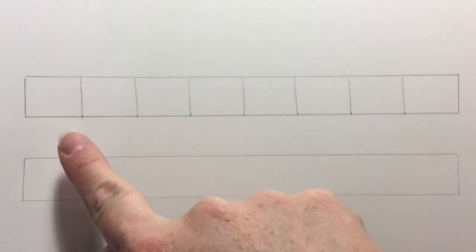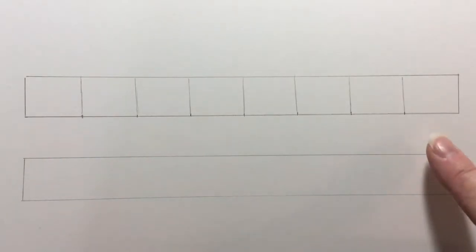This video is going to cover creating a value scale and a gradation scale. In the value scale on top, the first box is going to be the white of the paper, while the last box is going to be as dark as your pencil will go.